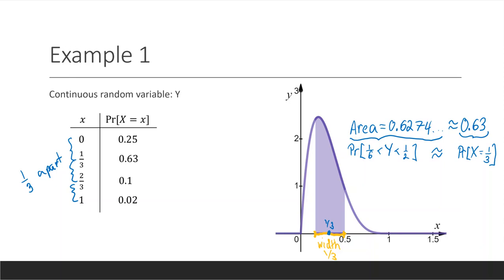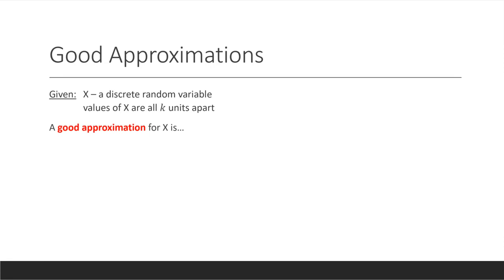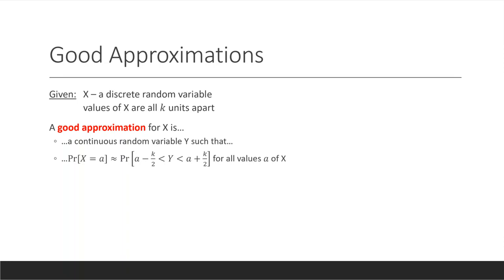What is a good approximation? A good approximation — of which our example was one — is as follows. We're given a discrete random variable x, and we require that the values of x are all k units apart, where k is the same number for each. So for our example, k is one-third. A good approximation for x is then a continuous random variable y such that the probability of x equaling a is approximately the probability of y being in an interval of width k centered at a, for all values a of x.